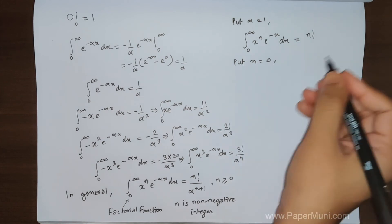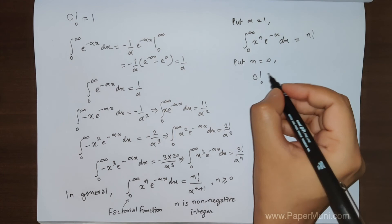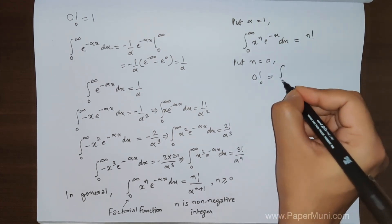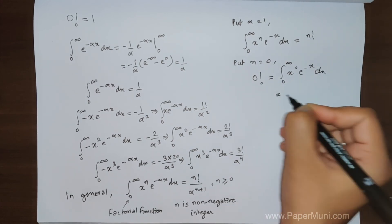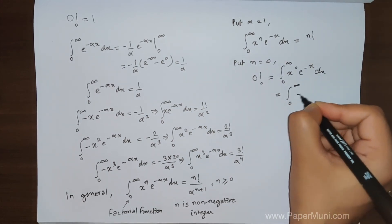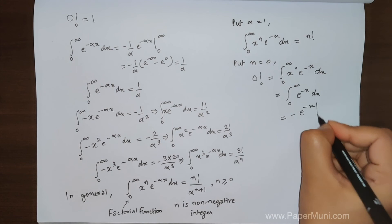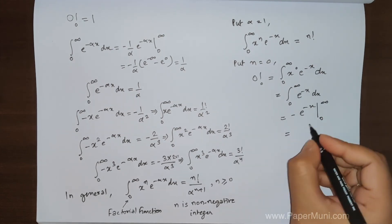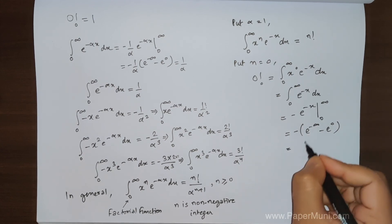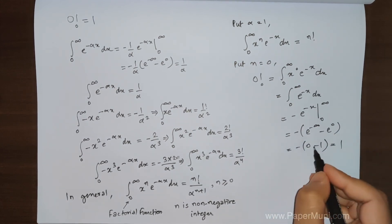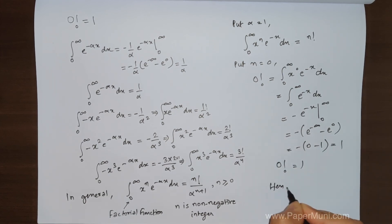Now if we put n equal to 0, on the right-hand side we get 0 factorial. On the left-hand side we get the integral from 0 to infinity of x to the 0 times e to the power minus x dx, which simplifies to the integral from 0 to infinity of e to the power minus x dx. Solving this, we get minus e to the power minus x from 0 to infinity, which gives minus 0 minus minus 1, so this equals 1. Therefore, 0 factorial equals 1, and hence proved.